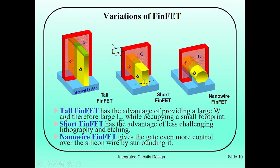Tall FinFETs have the advantage of providing large width and therefore large on-current while occupying a small footprint. Short FinFETs have the advantage of less challenging lithography and etching. Nanowire FinFETs give the gate even more control over the silicon wires by surrounding it completely.